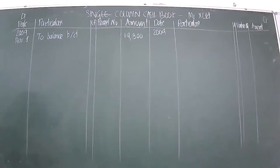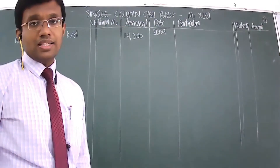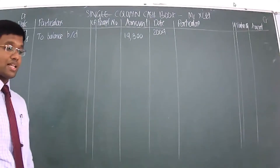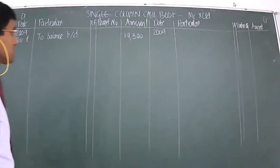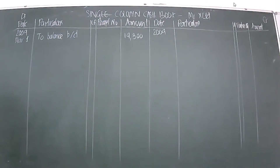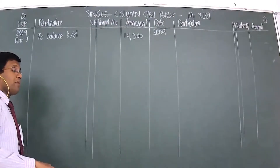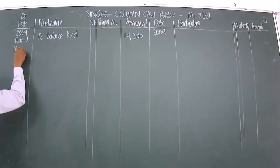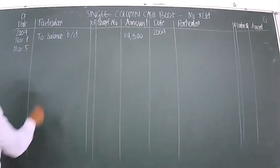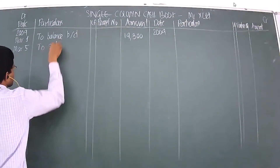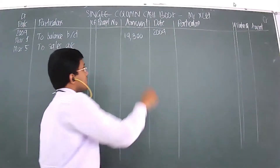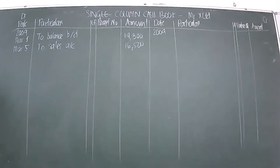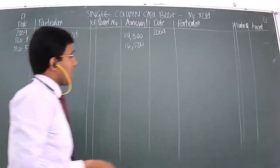The next transaction is March 5th: cash sales of 16,500. Whenever you carry out a cash sale, cash would be coming in. Remembering the golden rule — debit what comes in — this entry features on the debit side. It is: To Sales Account, and the amount is 16,500.